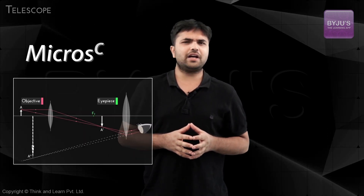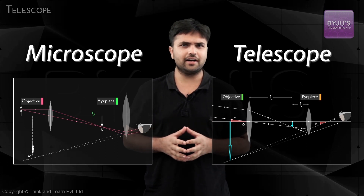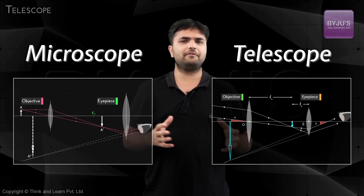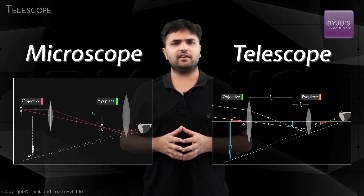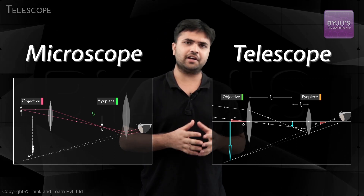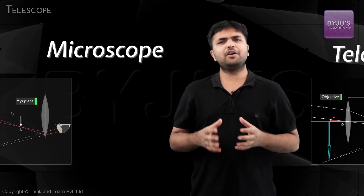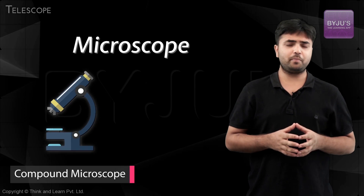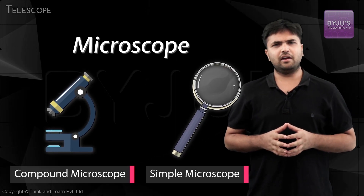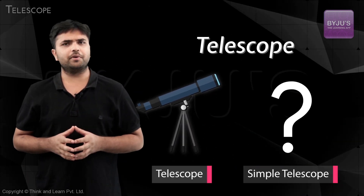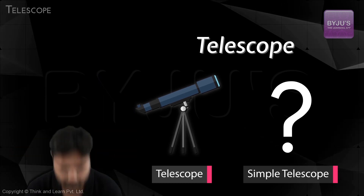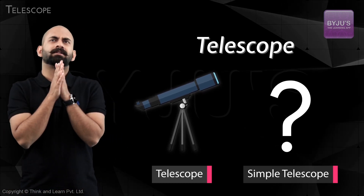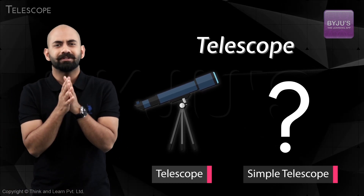Hey Avinash, all beautiful, but I have a doubt. Microscopes and telescopes have almost similar working, right? They both have two converging lenses and two-step image formation, then magnification. But we had two versions of a microscope — a compound microscope and a simple microscope. Why don't we have a simple telescope? So why no simple telescope? Let's see.